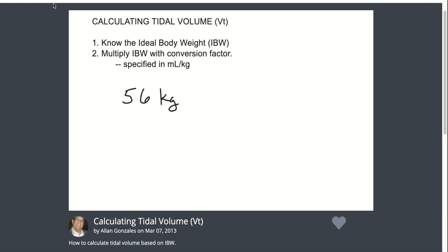So if we have a patient who is 56 kilos, and if the conversion factor given to you is 8 mLs per kilogram, you will then multiply your 56 times 8, and you will get your 448 mLs of tidal volume.